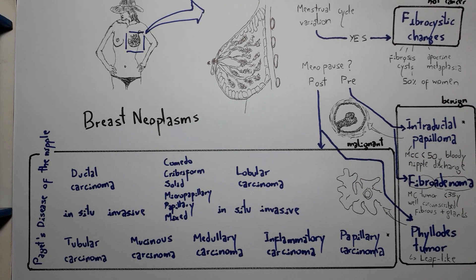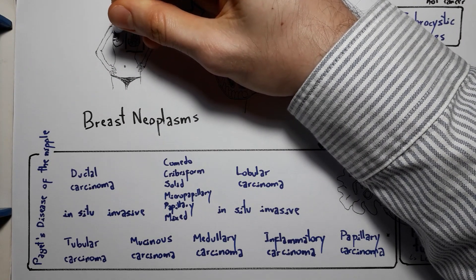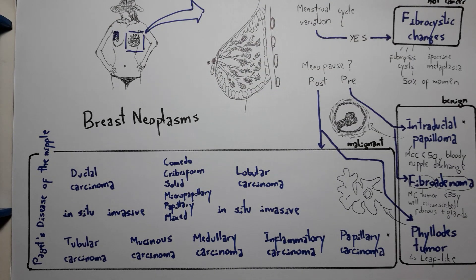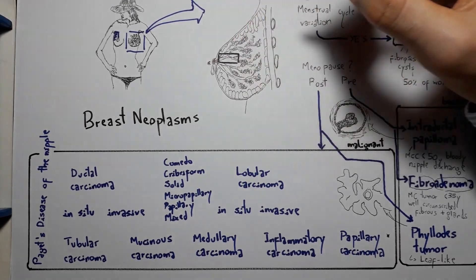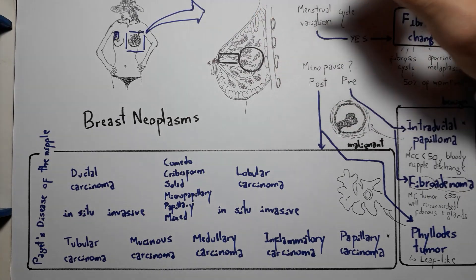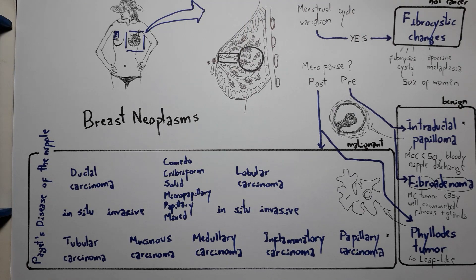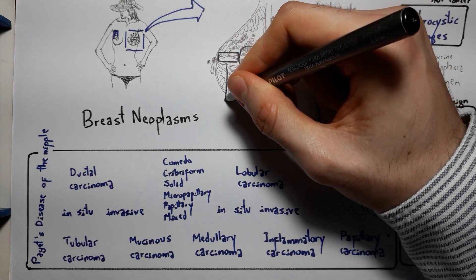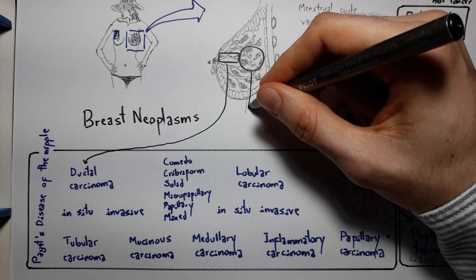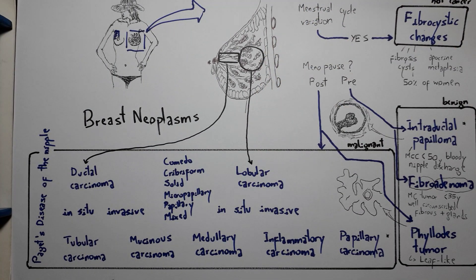Now let's get to the malignant neoplasms — breast cancer. Breast cancer is most common in the upper outer quadrant of the breast, simply because that's the region with the highest density of breast tissue. When talking about breast cancer, the first question we should ask is where it originates: is it a disease of the ducts, responsible for taking milk to the nipple, or is it a problem from the lobules, responsible for forming milk? If it originates from the ductal epithelium, it's a ductal carcinoma. If it originates from the lobules, it's a lobular carcinoma.